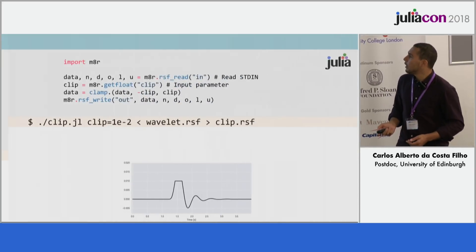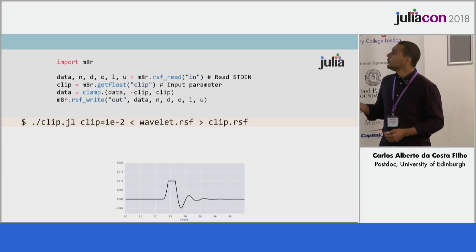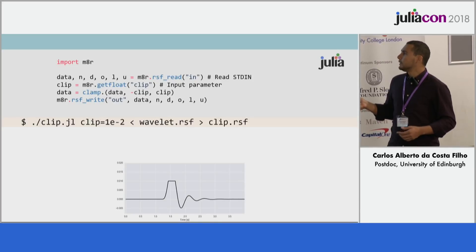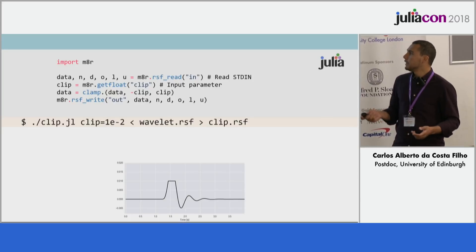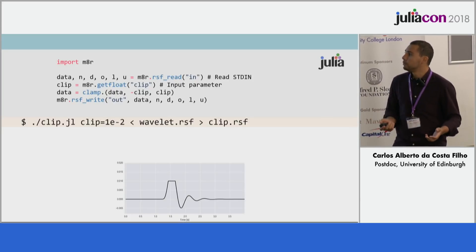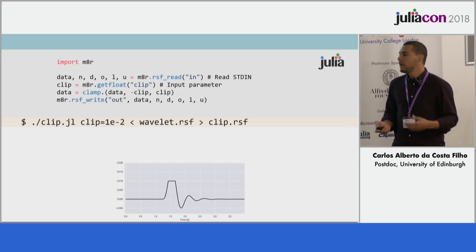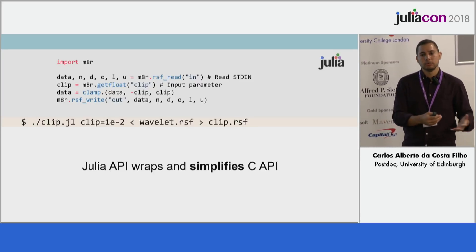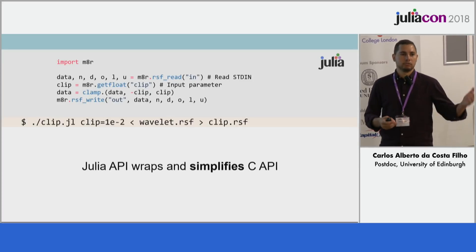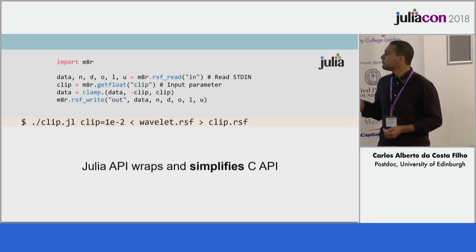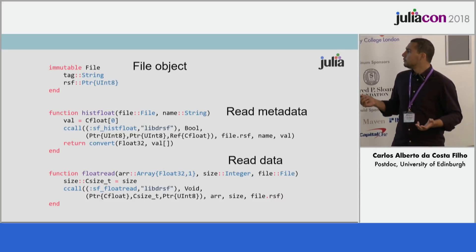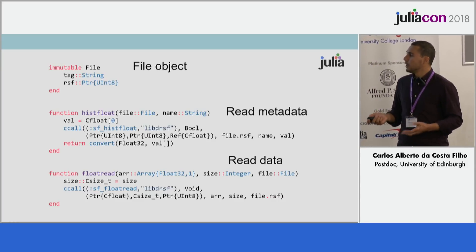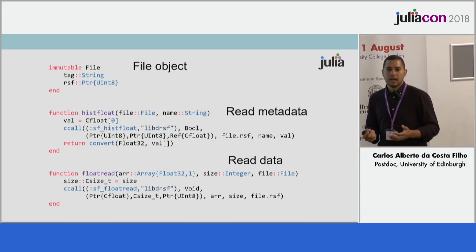Let's look at how Julia does the same thing as the Python API. Here we have a higher-level function call simply called RSF read. 'In' indicates reading from standard input, then we get the parameter clip, clip the data — in Julia we use 'clamp' — and then write it to standard output. We can run the same thing and get the exact same result, but now it's a bit higher level. It simplifies the C API, which Python also tries to do but struggles with because of the SWIG boilerplate code.